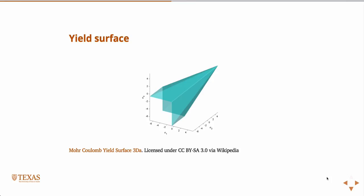If we look at this, it's a little bit strange plot to look at, but if we look at this failure criterion — the Mohr-Coulomb failure criterion — in what we call stress space.